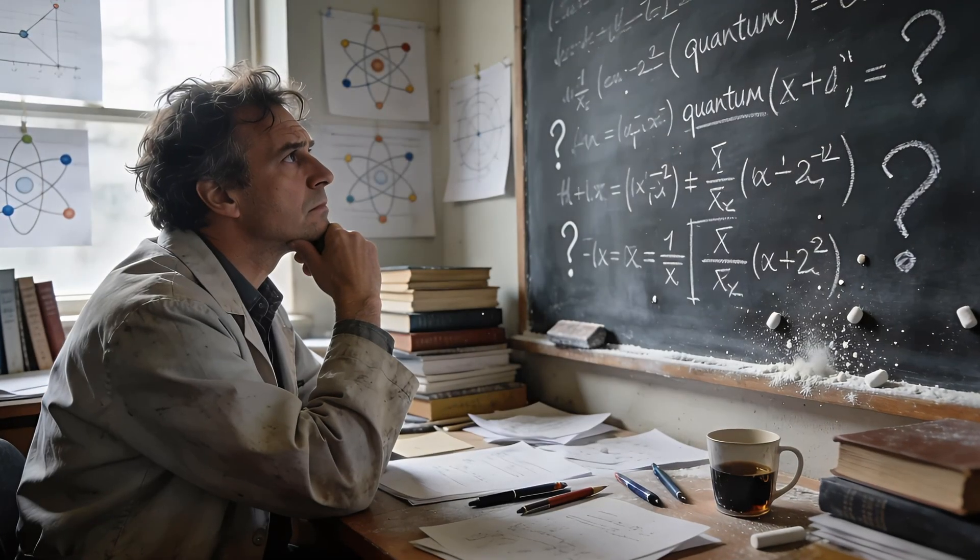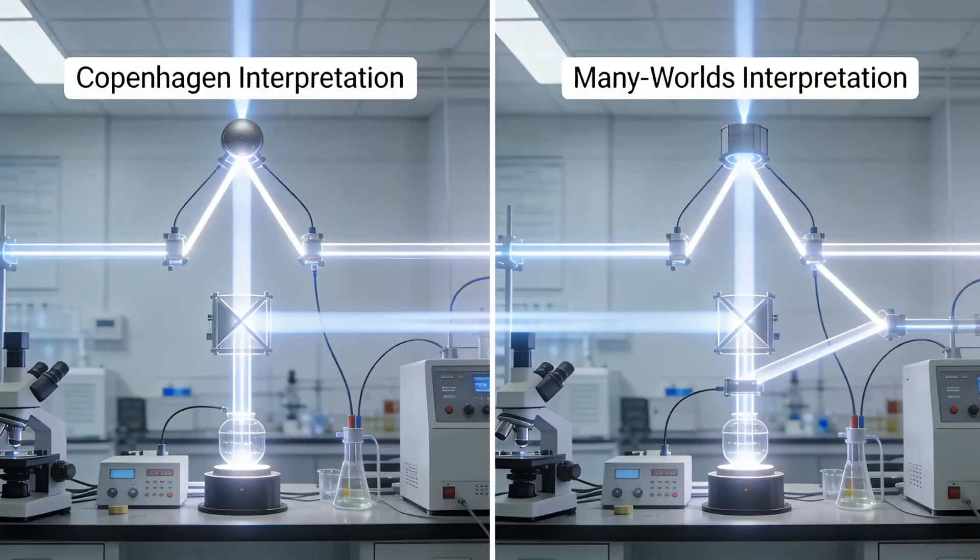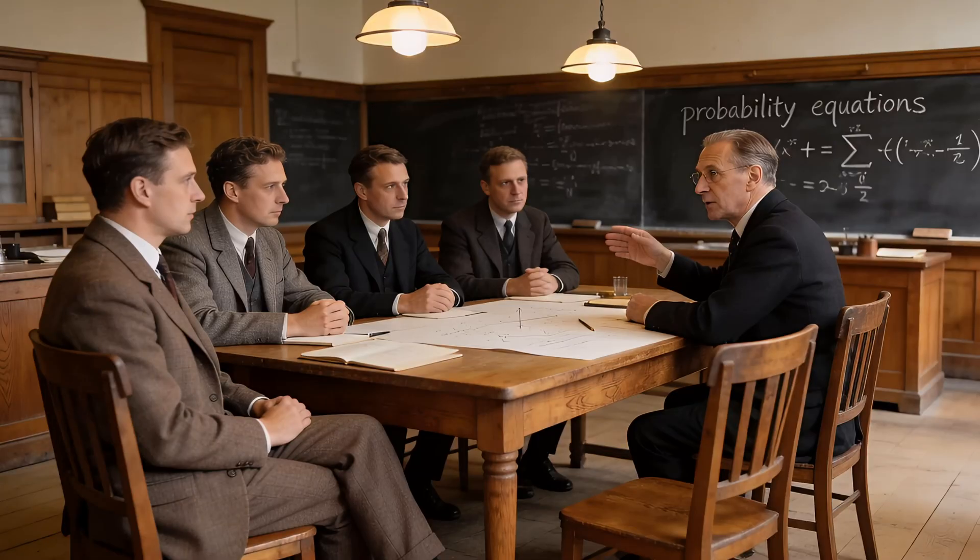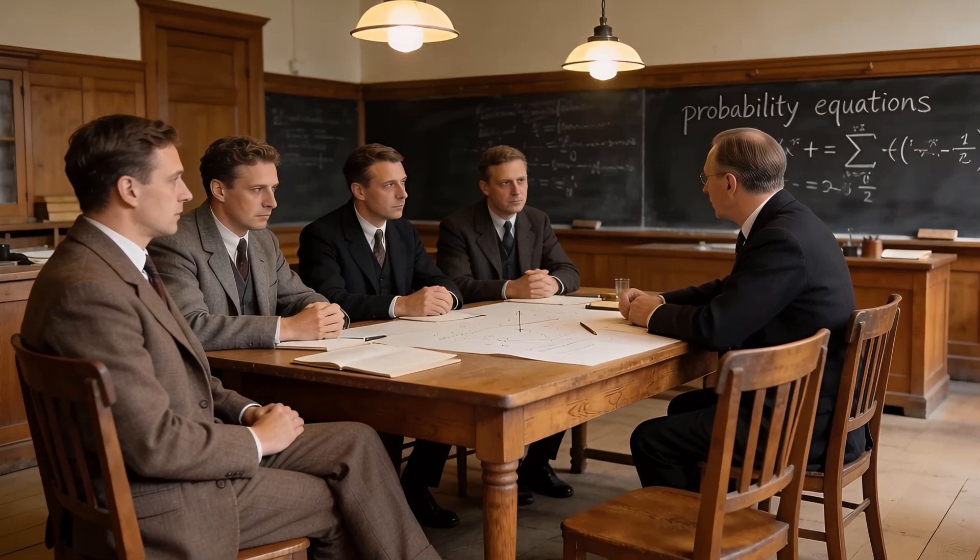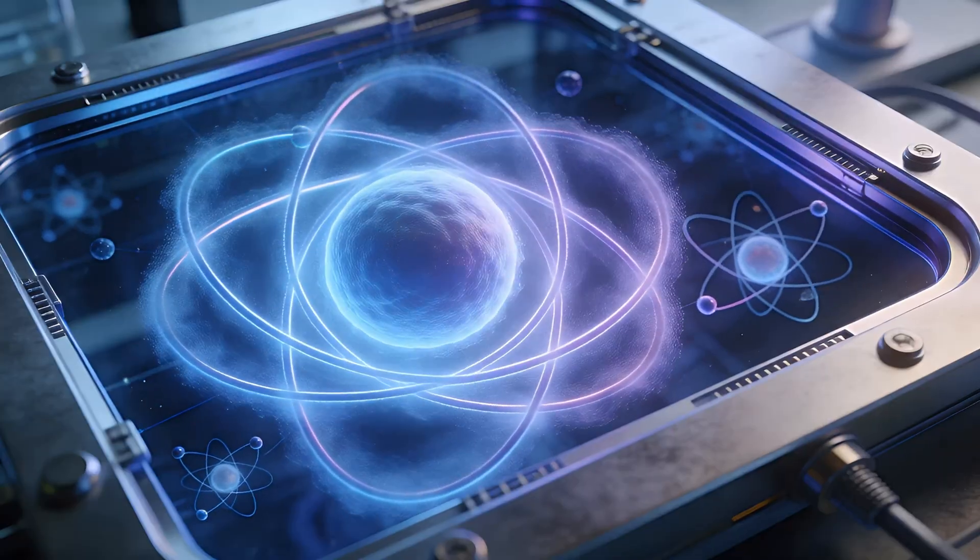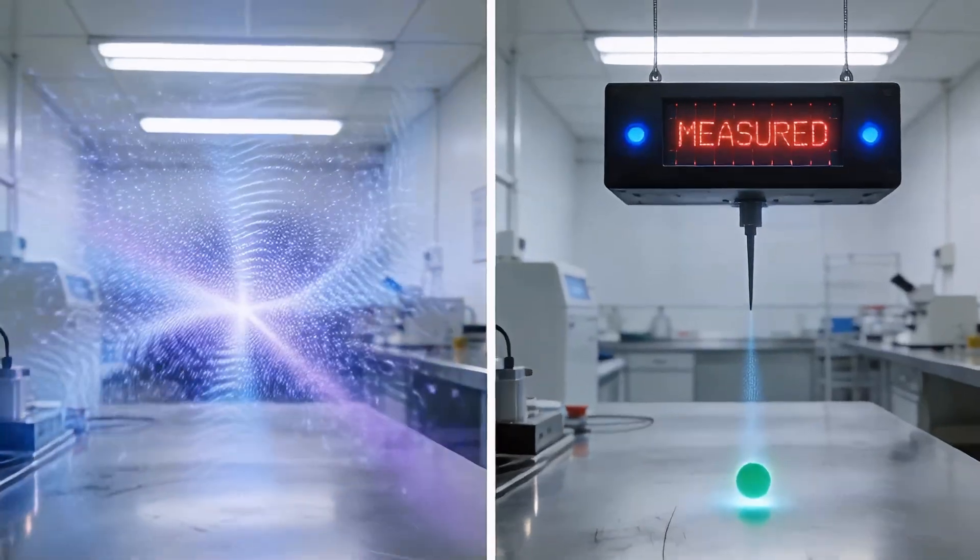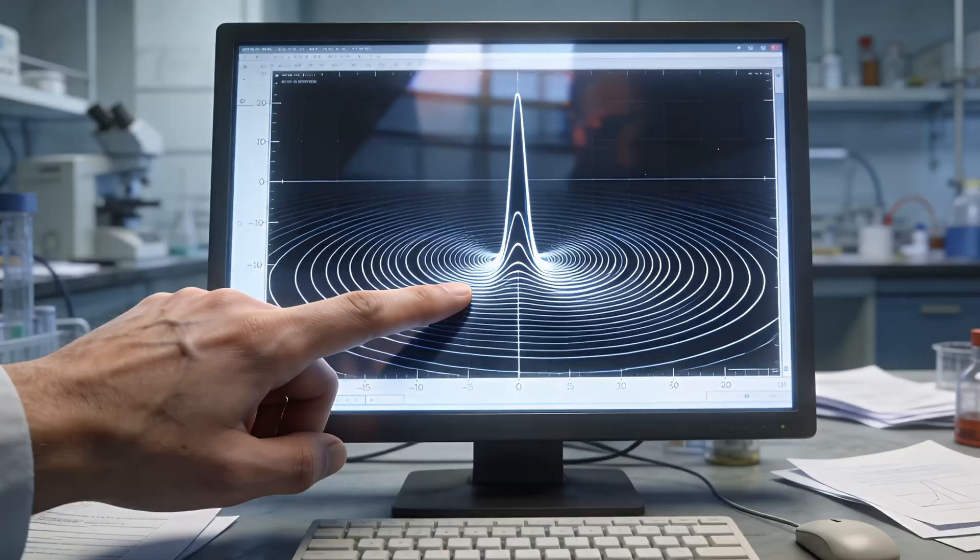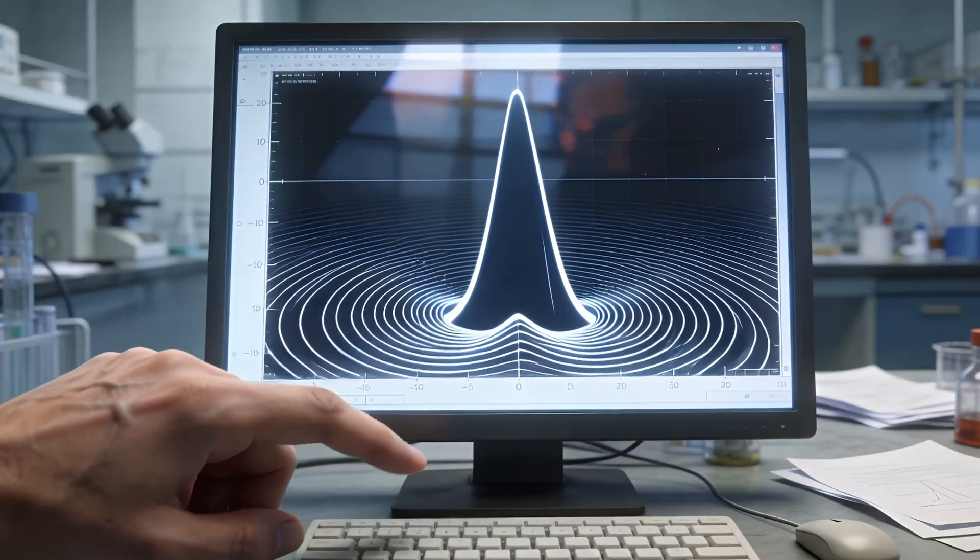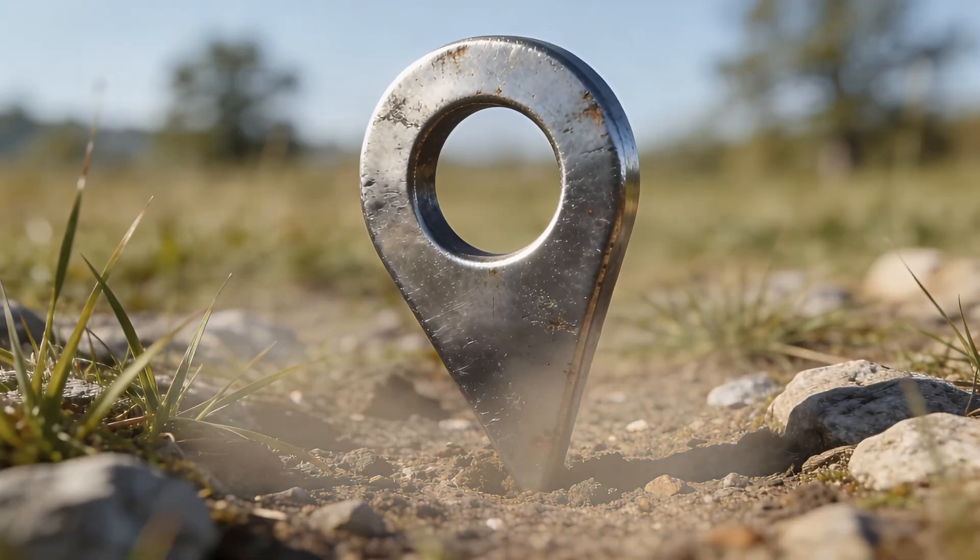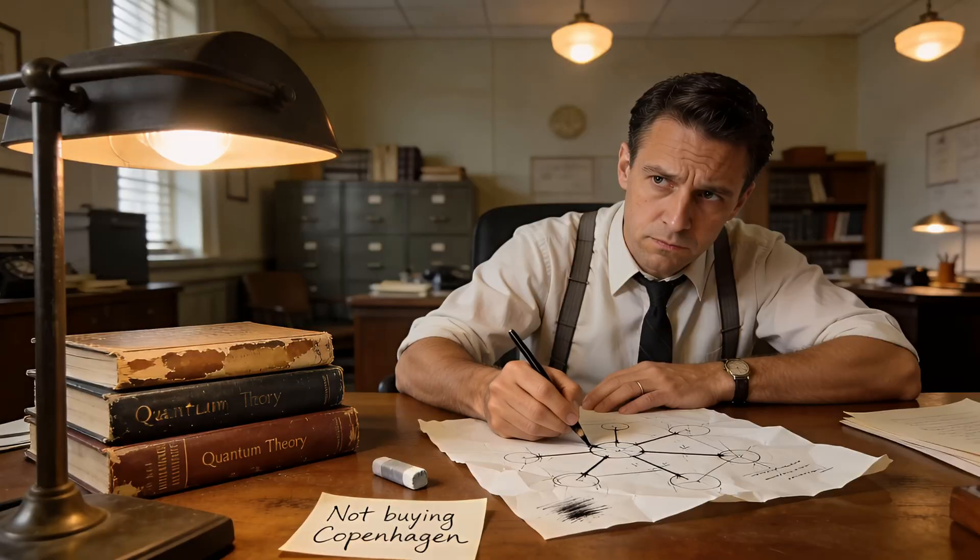This leads to bigger questions, like what quantum mechanics really means. There are different interpretations. The most famous is the Copenhagen interpretation, named after Niels Bohr's group in Denmark. It says that the quantum world is probabilistic. Particles don't have definite properties until measured. The wave function describes possibilities, and observation collapses into certainty. In other words, reality is fuzzy until we pin it down. But not everyone buys that.